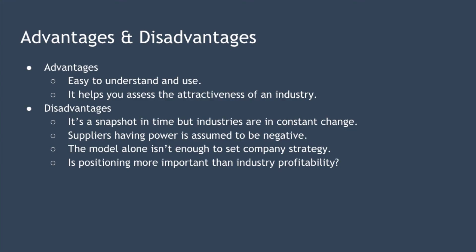In terms of disadvantages, the model analyses the industry as a snapshot at a single point in time, but in reality the industry is constantly changing because of new strategies and tactics adopted by firms. Suppliers having power is assumed to be a negative in the model, but many organisations today use joint ventures and affiliations so everybody thrives. The model alone isn't enough to enable a company to set its strategy — it'll also need to consider other factors such as the organisation's strengths and weaknesses. Finally, a company's positioning is arguably more important for profitability than the industry it operates in, as the iPhone example demonstrates.